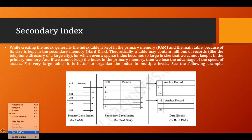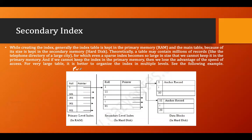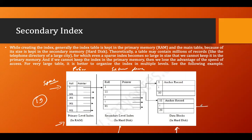Then we have the secondary index. An example shows both sparse and dense indexing — the sparse index is stored in RAM and the dense index along with the actual data is stored on the hard drive. For example, if we're looking for roll number 19, we go to roll number 1 in the RAM index, which points to roll number 11, and from 11 we can navigate to roll number 19. This is how a secondary index search works.